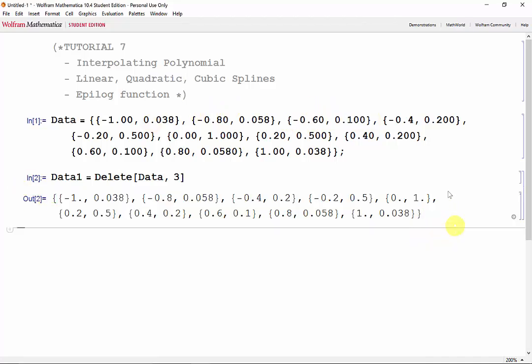Alright, now that we have the data, let's take a look at the two interpolating functions we can use. The first one we'll take a look at is the interpolating polynomial function. As we know from class, for every set of n plus 1 data points, we can find a unique nth degree polynomial. This is the polynomial that the interpolating polynomial function finds for us.